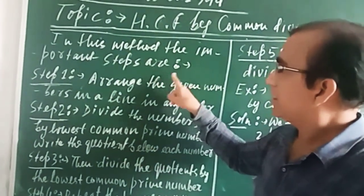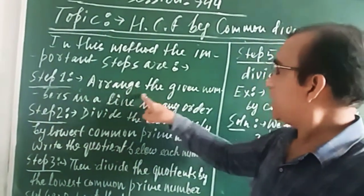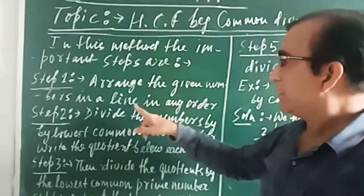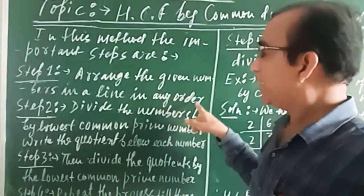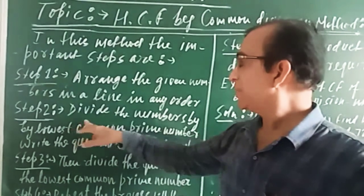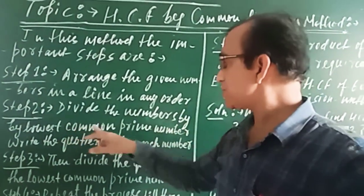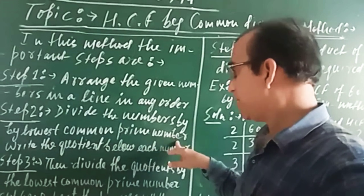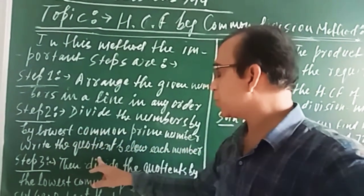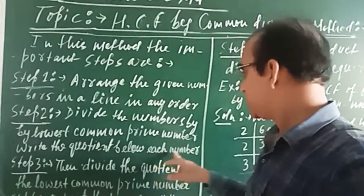In this method, the important steps are: Step 1: Arrange the given numbers in a line in any order. Step 2: Divide the numbers by the lowest common prime number. Write the quotient below each number.